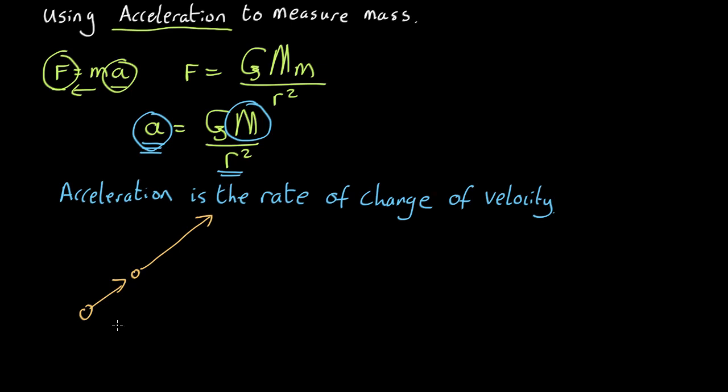We can work out how big it is by plotting the initial velocity vector, and plotting the final velocity vector starting in the same place. And the difference is the acceleration.